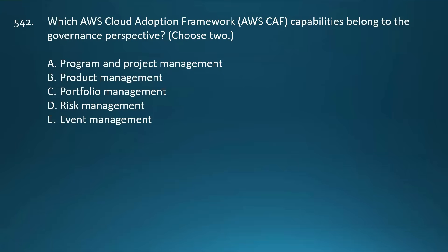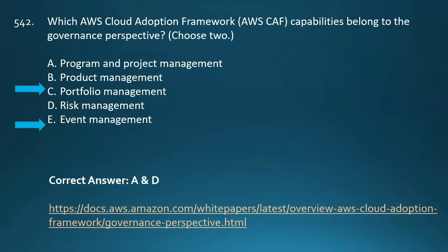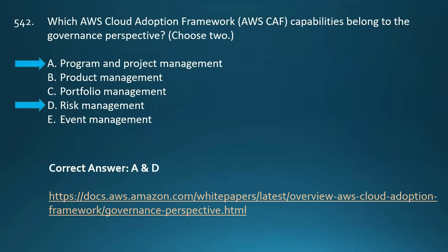The correct answers are Program and Project Management and Risk Management. Product Management and Portfolio Management belong to the Business Perspective, and Event Management is part of the Operations Perspective. There is a link on your screen — go through it to understand all the different capabilities included in the governance perspective of the AWS Cloud Adoption Framework.